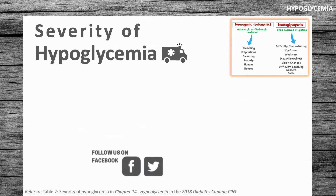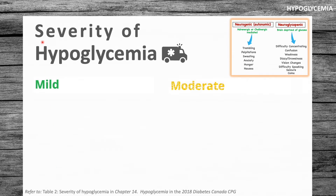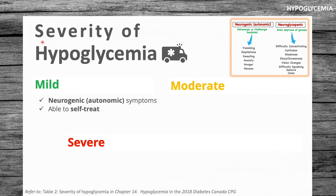Before we dive into the answer, let's look at the severities of hypoglycemia: mild, moderate, and severe. With mild, there are neurogenic or autonomic symptoms — cholinergic or adrenergic mediated — including hunger, trembling, sweating, and palpitations, and generally the person is able to self-treat without assistance.